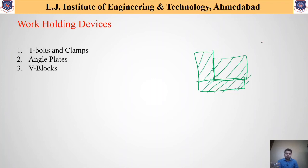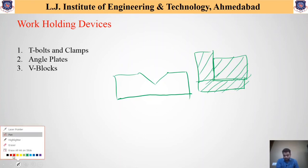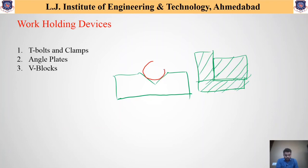The third work holding device is V-blocks. We have discussed flat workpieces and workpieces fixed at perpendicular locations, but if one wants to fix circular workpieces, V-blocks are used. On the V-section of these blocks, circular workpieces can be fixed and held properly during machining operation. In most cases, V-blocks are used to hold circular workpieces during the machining operation.